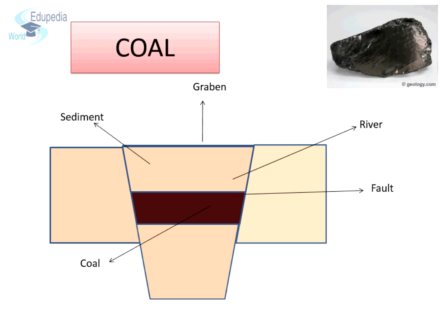It is also essential that conditions required in coal formation remain undisturbed for a significantly long period of time. Such conditions have been found in ancient troughs — those formed due to blocks. In fact, the continuity of troughs across continents has served as an essential evidence for continental drift. For example, the coal found in troughs in Madagascar has also been traced in the Narmada region.